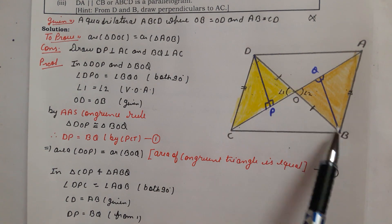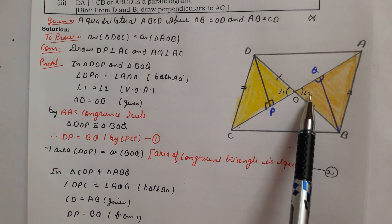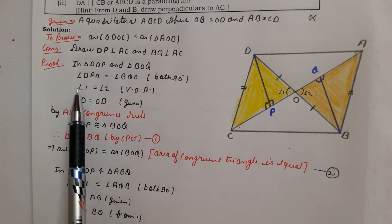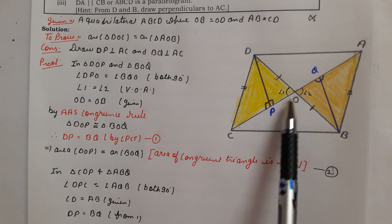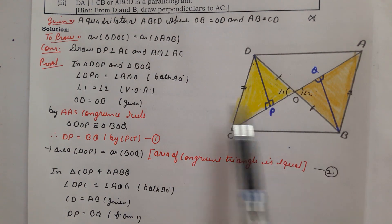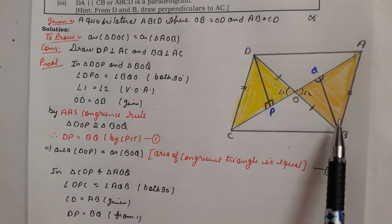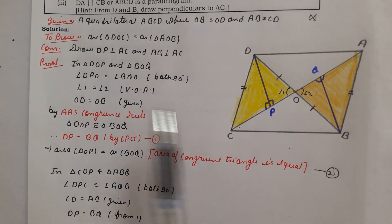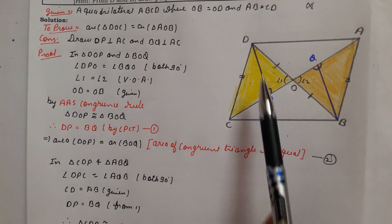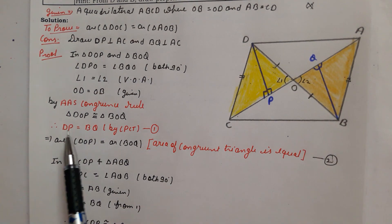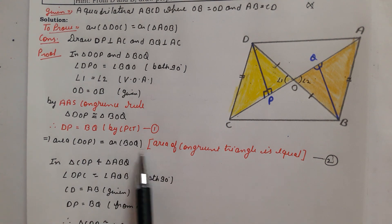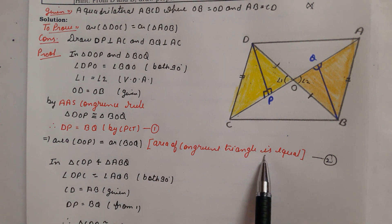In triangles DOP and BOQ: OD equals OB (given), Angle 1 equals Angle 2 (vertical opposite angles), and Angle DPO equals Angle BQO equals 90 degrees (by construction). So by AAS congruence, triangle DOP is congruent to triangle BOQ. Therefore by CPCT, DP equals BQ — we have written this because we will need it.